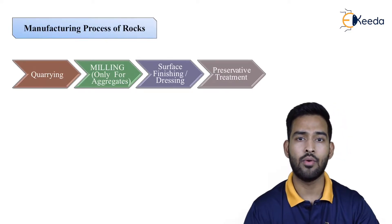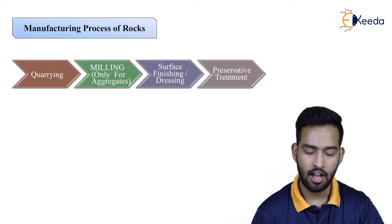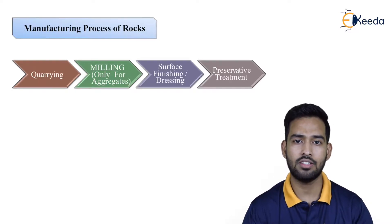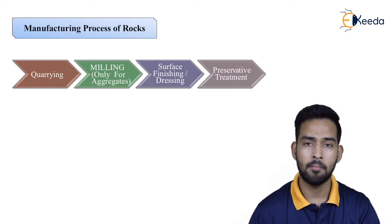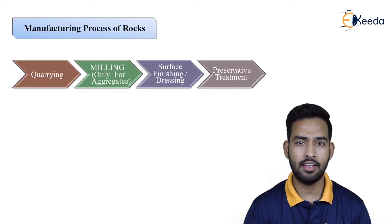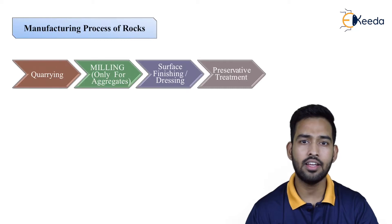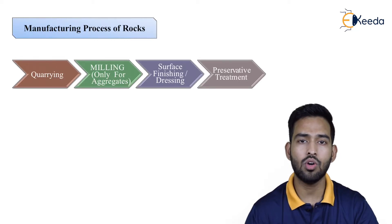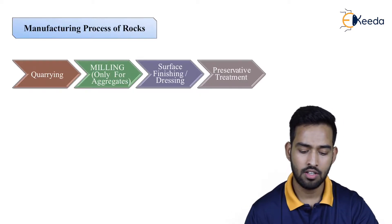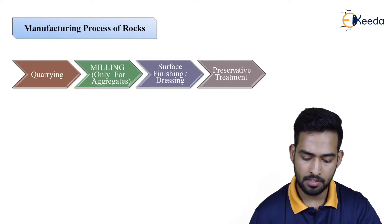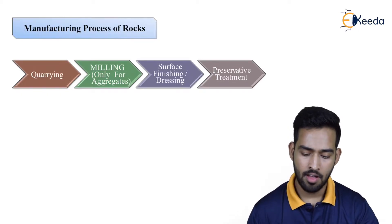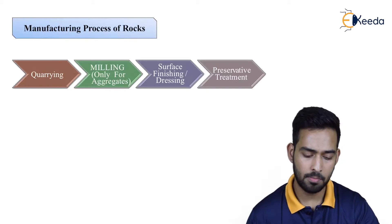The first step is quarrying. After quarrying we have to go for mining, and mining is done only for aggregates. As we know we require aggregates on a construction site, and aggregates are of smaller sizes. After mining, next is surface finishing and dressing. Then the last step is preservative treatments, because we have to store these stones for future use. So in this video we will see the process of manufacturing in detail.